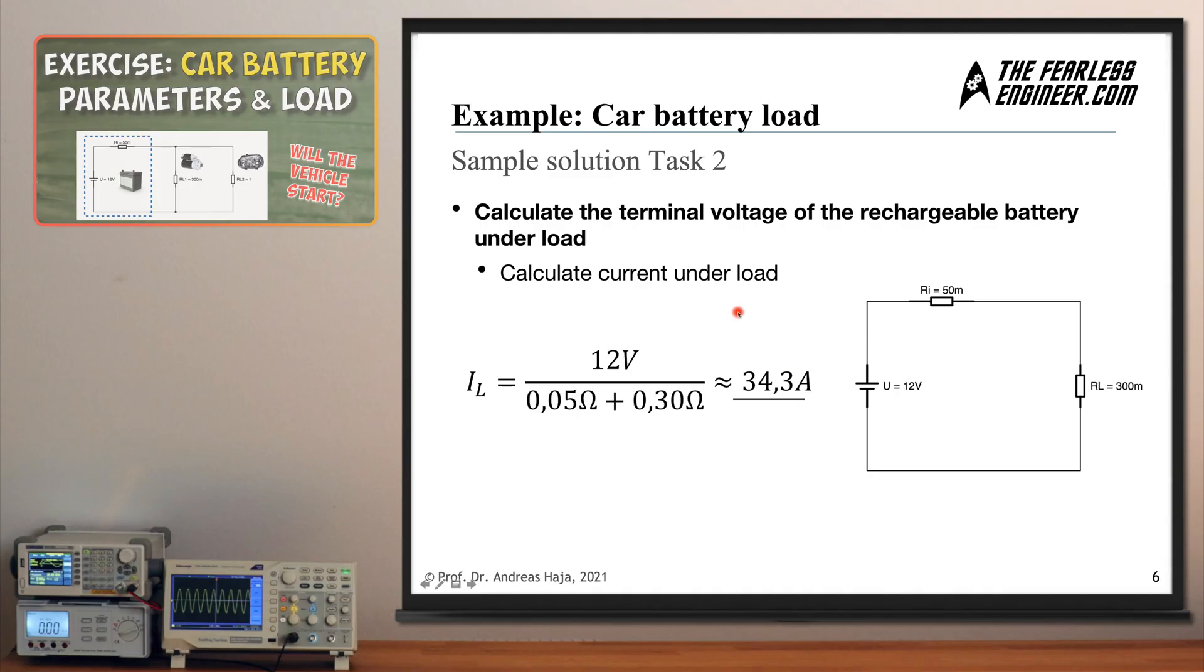And based on this circuit we can now simply compute the load current by dividing the voltage of the internal perfect voltage source by the resistance of these two resistors connected in series, which is simply the sum of the two. We have made a video on connecting resistors in series and if you have watched it you will know that you simply have to sum up the separate values, 50 milliohms plus 300 milliohms, which has been done here in the denominator, and this gives you a current of 34.3 amps which the starter draws from the battery.